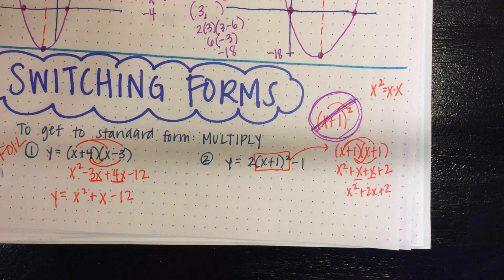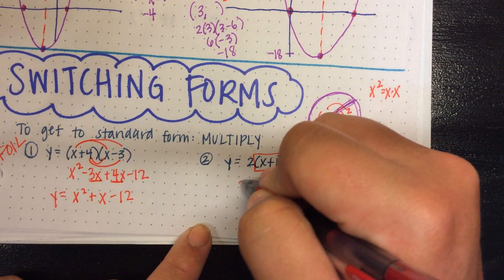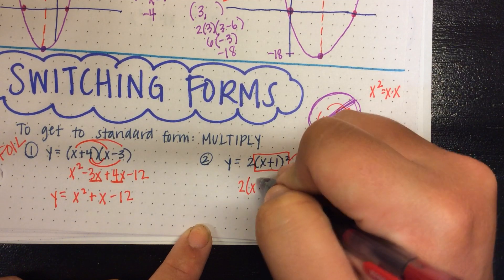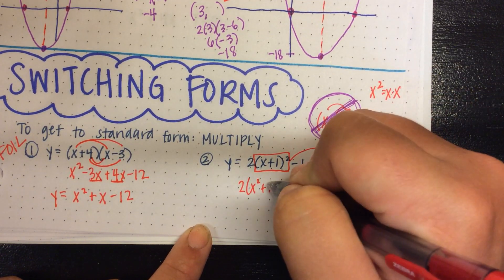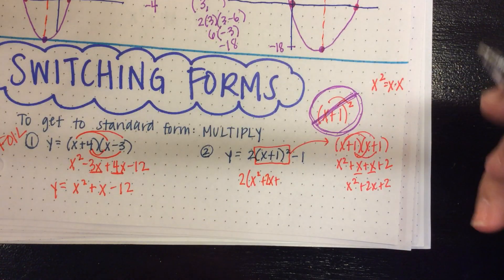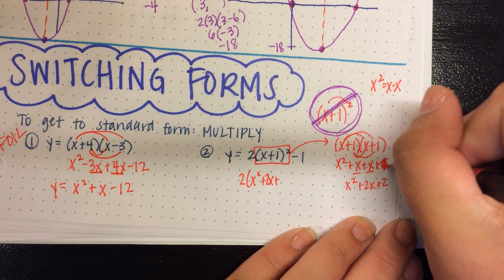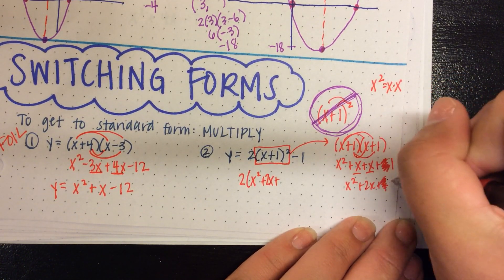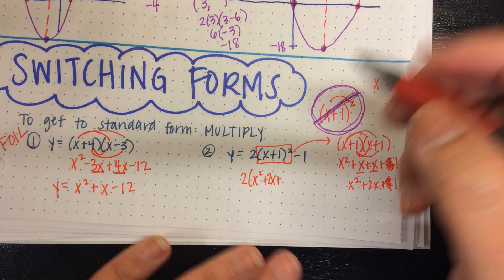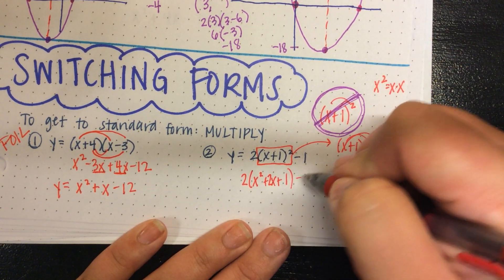Simplify. But I'm not done yet. I've got to plug back in. So I've got 2 times x squared plus 2x plus 1 minus 1. Now I can distribute the 2.